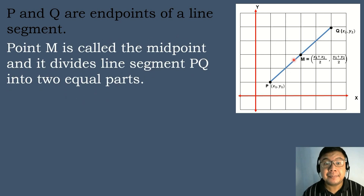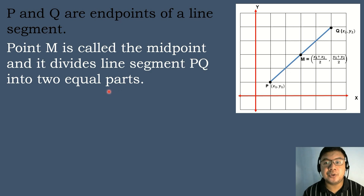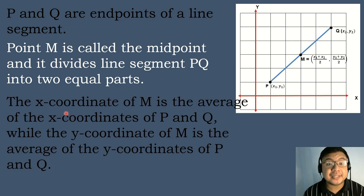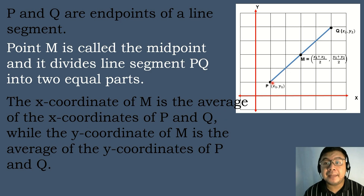Point M is called the midpoint. When we say midpoint, it divides a line segment into two equal parts. So in this figure, point M divides the line segment PQ into two equal parts, which is segment PM and segment MQ. To find the x-coordinate or the abscissa of M, we will get the average of the x-coordinate of point P and point Q.